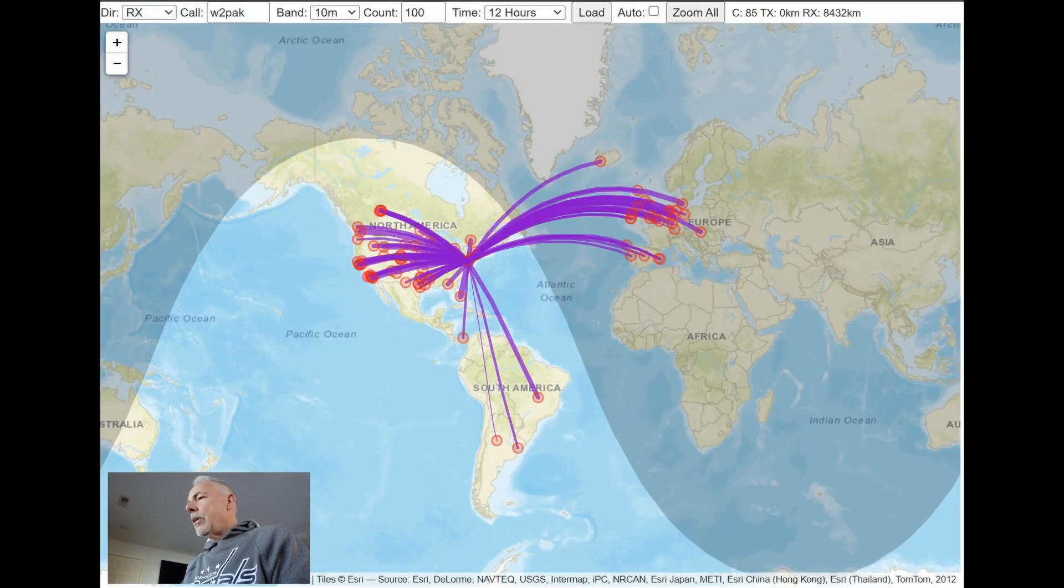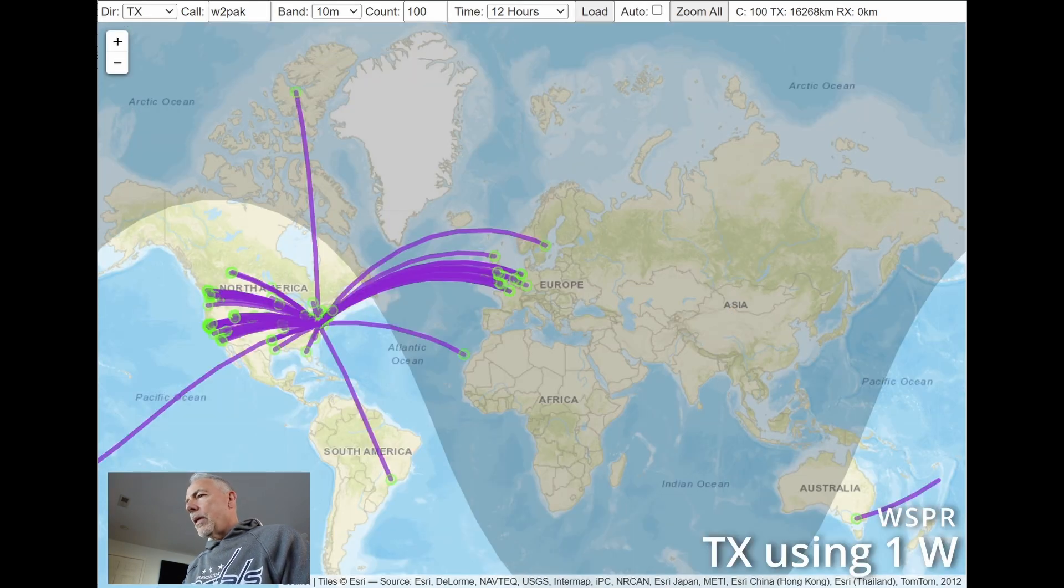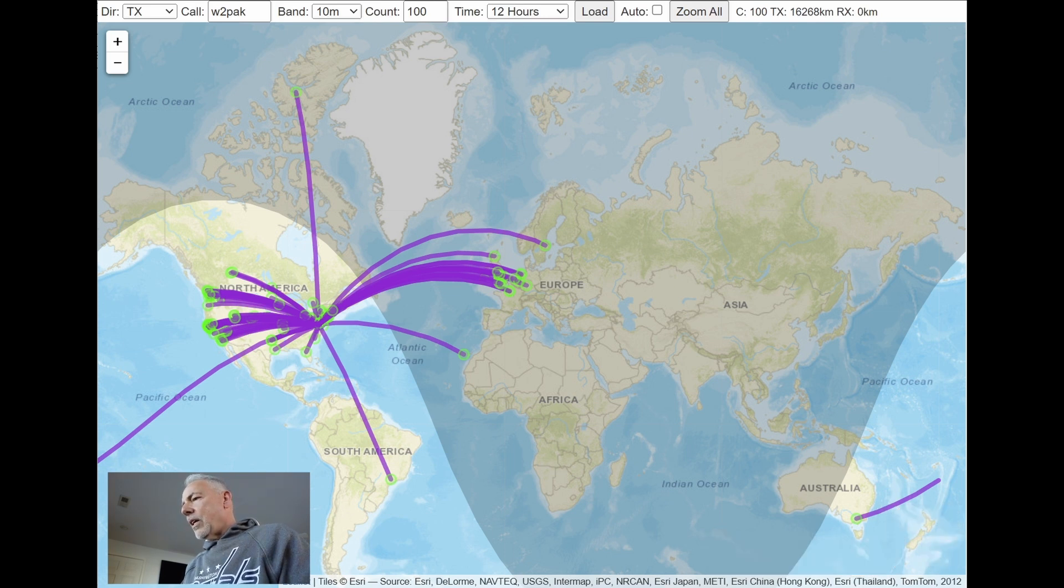So I ran Whisper. And Whisper is the weak signal propagation system. And you can see this is the receive side. Many stations in Europe, station in Iceland, some in South America. Pretty good received coverage there. And then on the transmit side, you can see, oh, there's one very Arctic and one in Australia, but also Europe, one in Africa, right off the coast there, one in South America. So pretty good on 10 meters for a very simple antenna. This was a one watt using Whisper.